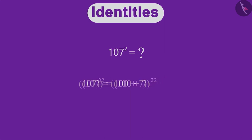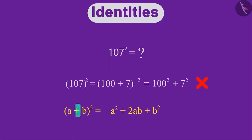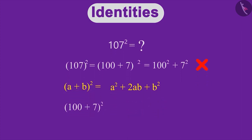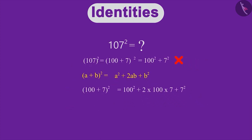We write (100 + 7)² as 100² + 7², but this is incorrect. Remember that it is an identity: (a + b)² = a² + 2ab + b². Therefore by applying identity we will expand (100 + 7)² in this way. After simplification we will get this as our final answer. So we should always keep in mind that (a + b)² is not equal to a² + b².